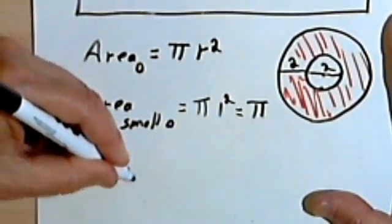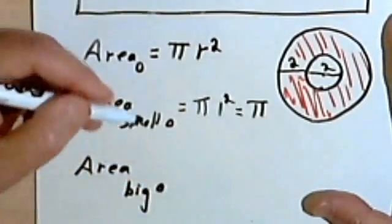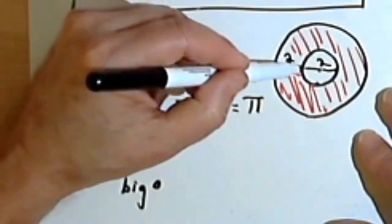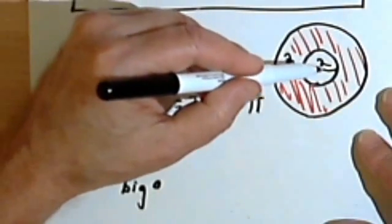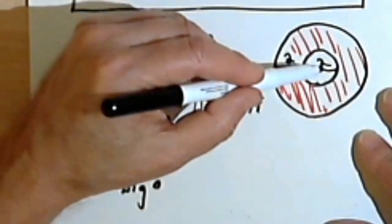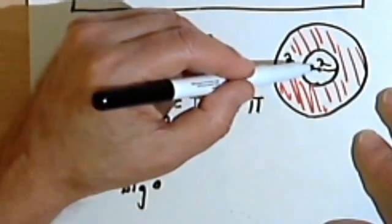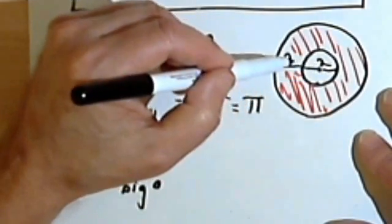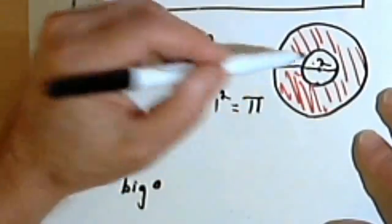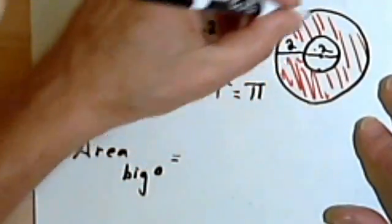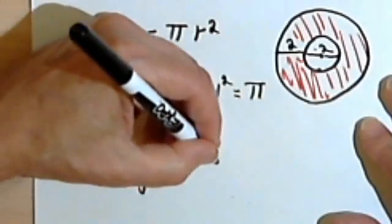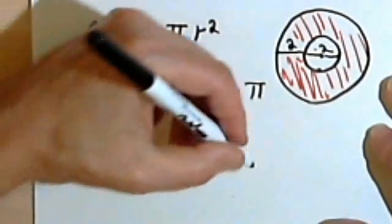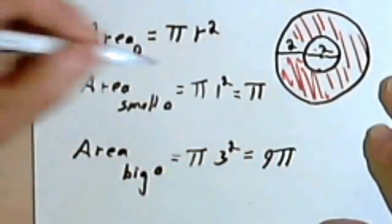Now let's find the area for the big circle. What we need is the radius for the big circle. We know that the distance across the ring is 2, and if we want to go to the center, we go from the edge to the center, which includes the radius of the small circle. So the distance from the edge of the big circle to the very center is going to be 2 plus 1, or 3. So the area for the whole big circle is going to be pi times 3 squared. 3 squared is 9, so that's 9 pi.